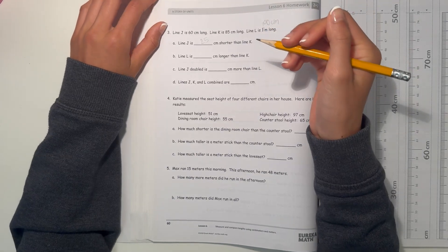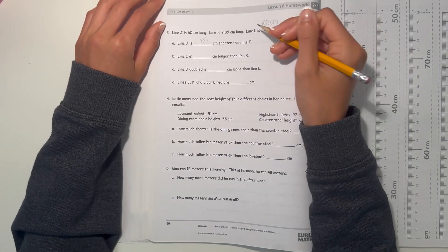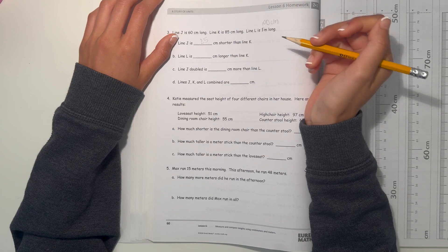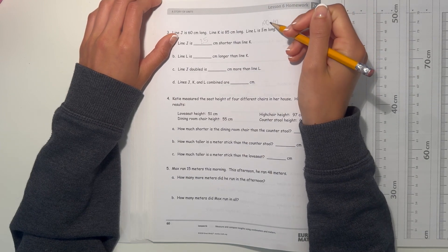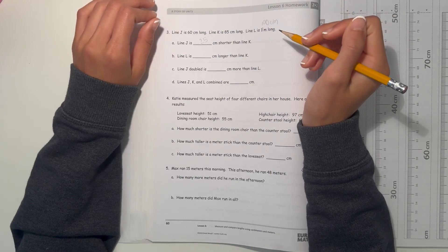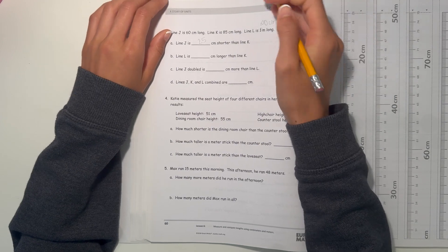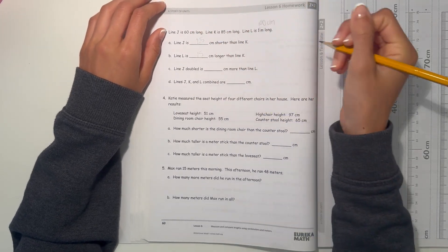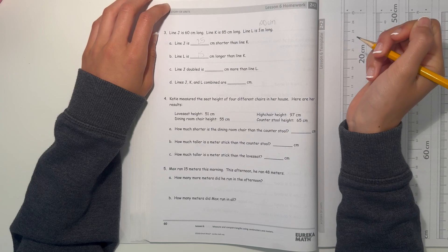And line L, this one is blank centimeters longer than line K. So 100 centimeters minus 85, that would be 15. So it's 15 centimeters longer than line K.